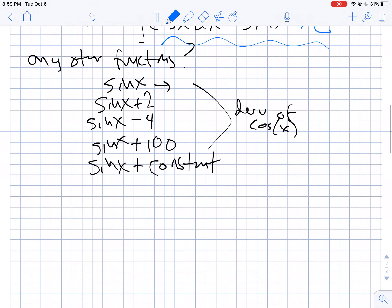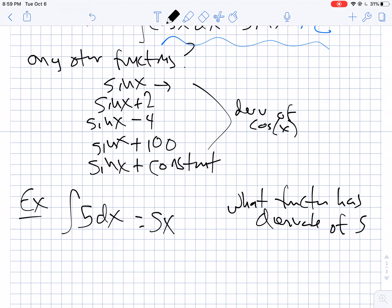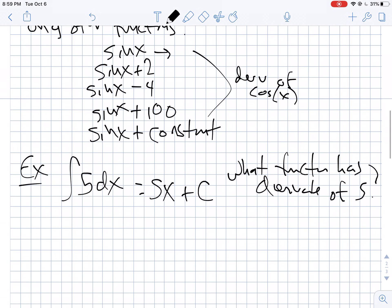Let's look at some other basic examples. The anti-derivative of 5 dx — what function has a derivative of 5? The derivative of 2x is 2, derivative of 10x is 10, so it could be 5x. And again, you could add on any constant. So the answer is 5x plus C. That's how you want to approach this type of problem, and we'll come up with some patterns in a minute.